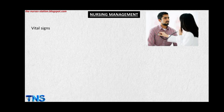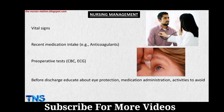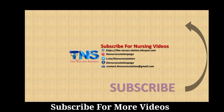Nursing management includes taking vital signs to establish a database of the patient's condition and investigating recent medication intake — for example, anticoagulants and antiplatelets — because these can increase the risk of hemorrhage during surgery and prolong healing. Pre-operative tests if indicated include CBC and ECG. Before discharge, educate the patient about eye protection, medication administration such as installation of drops and application of eye ointment, and activities to avoid.